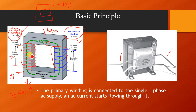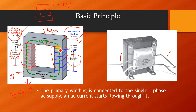The voltage provided at the input is called Vp (primary voltage), and the voltage obtained from the secondary is called Vs (secondary voltage).